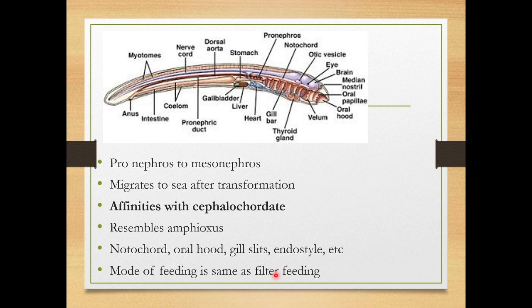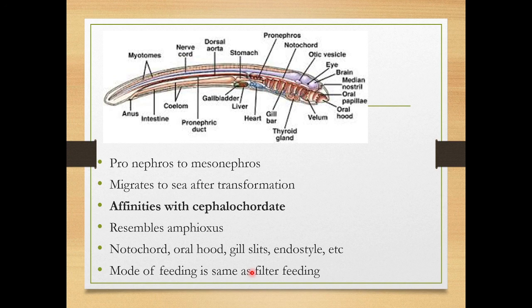Shared characters with Cephalochordata include: presence of a continuous unconstricted notochord, segmented musculature, seven pairs of gill slits, straight and coiled ciliated alimentary canal without specialization, larval endostyle similar to that of Amphioxus, absence of coelom, and the overall organization of the Ammocoetes larva is very closely similar to Amphioxus in the presence of gill slits, ciliated pharynx, endostyle, epipharyngeal groove, peripharyngeal bands, and microphagous filter feeding.